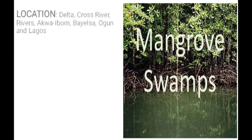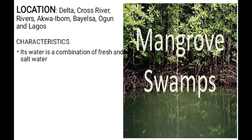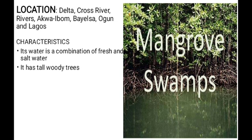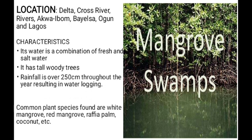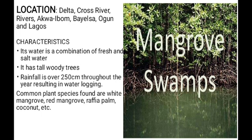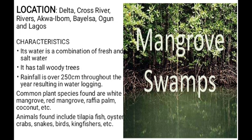Mangrove swamp forests can be found in states like Delta, Cross River, Bayelsa, Akwa Ibom, Ogun, and Lagos. The water is a combination of fresh and salt water because they are found in coastal regions. They have tall woody trees, and rainfall is over 250 centimeters throughout the year, resulting in waterlogging. Common plant species include white mangrove, red mangrove, raffia palm, and coconut. Animals found here include tilapia fish, oysters, crabs, snakes, birds, and kingfisher.